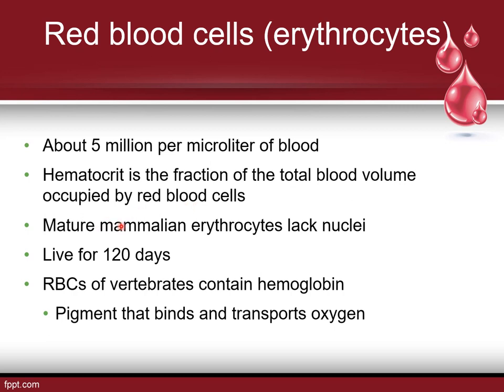Mature mammalian erythrocytes lack nuclei — a little different from white blood cells that have nuclei. The reason we have so many more red blood cells is the oxygen component. They're pretty small cells but have a large surface area, which allows for more oxygen and CO2 diffusion across them, helping maintain optimal functionality.